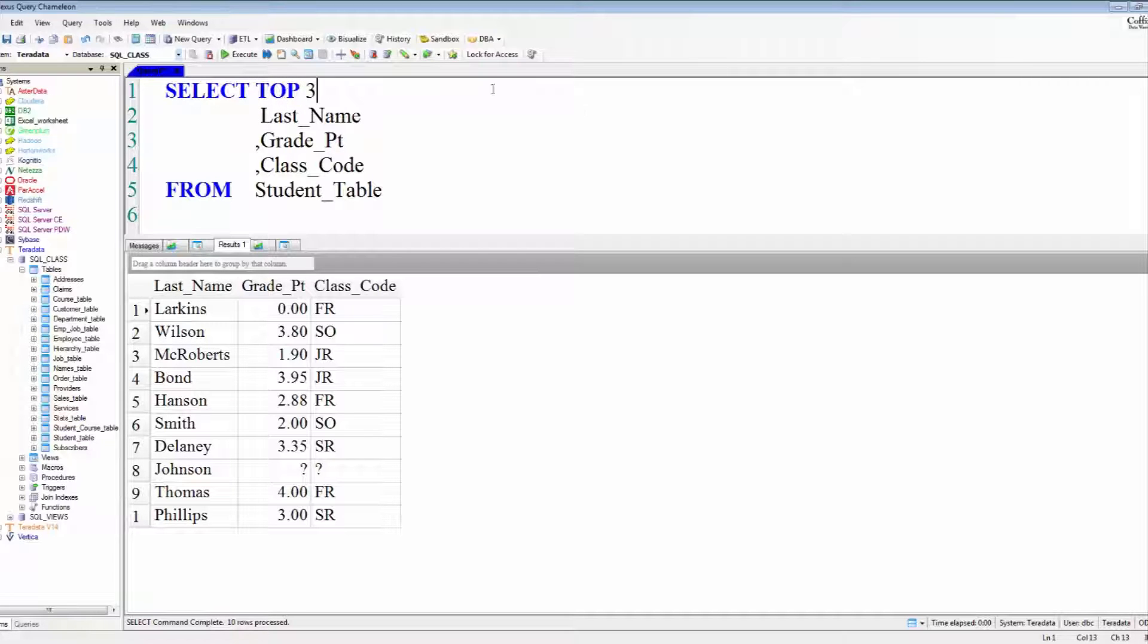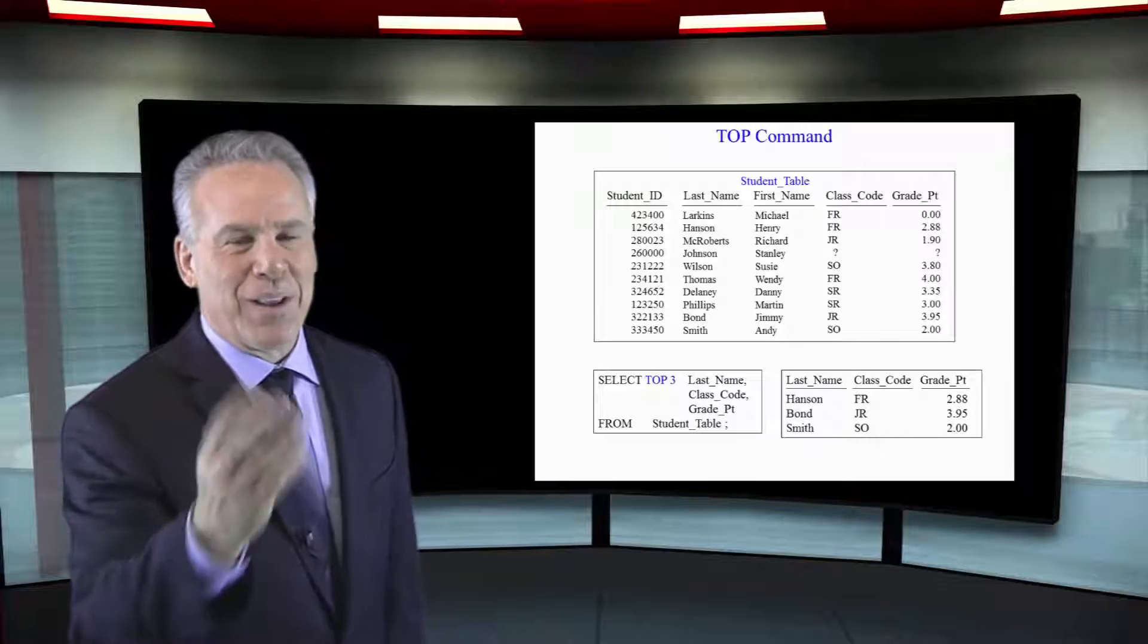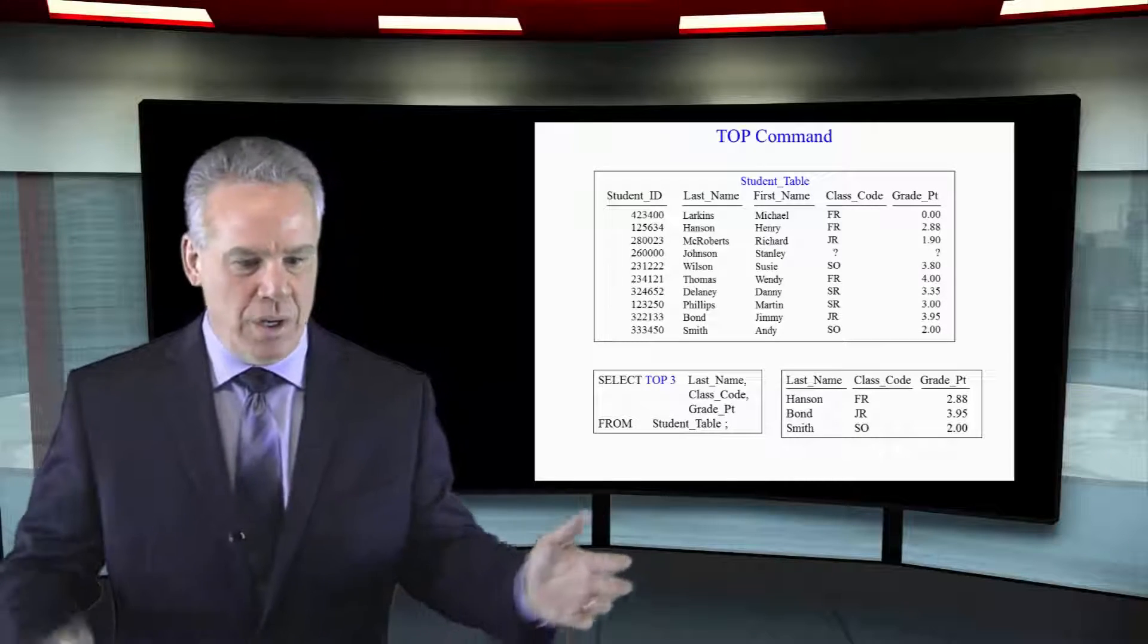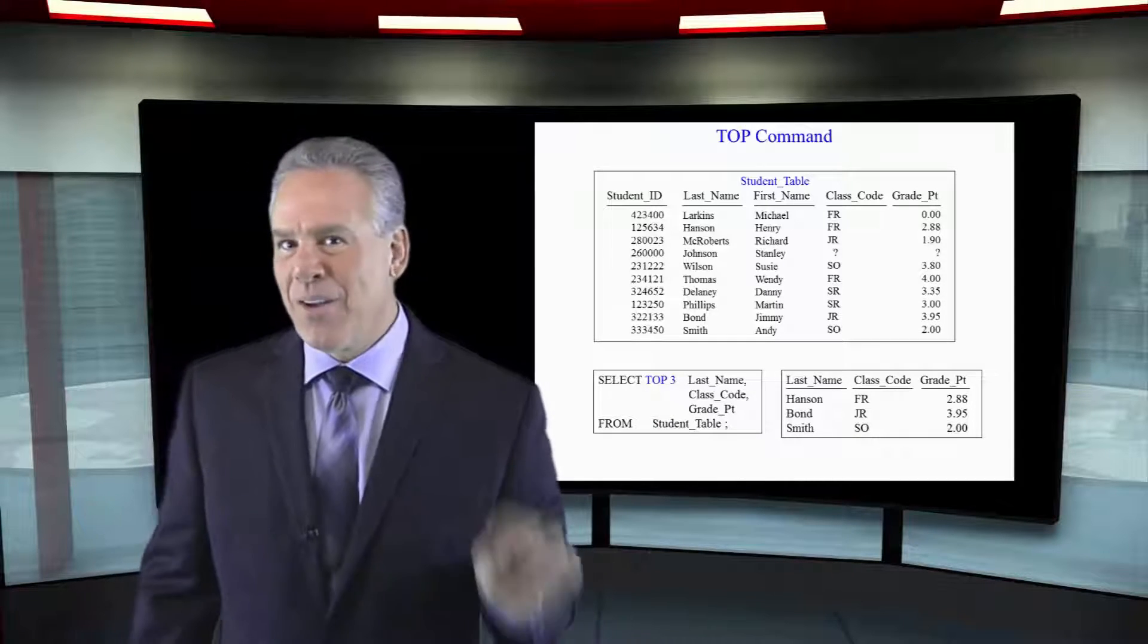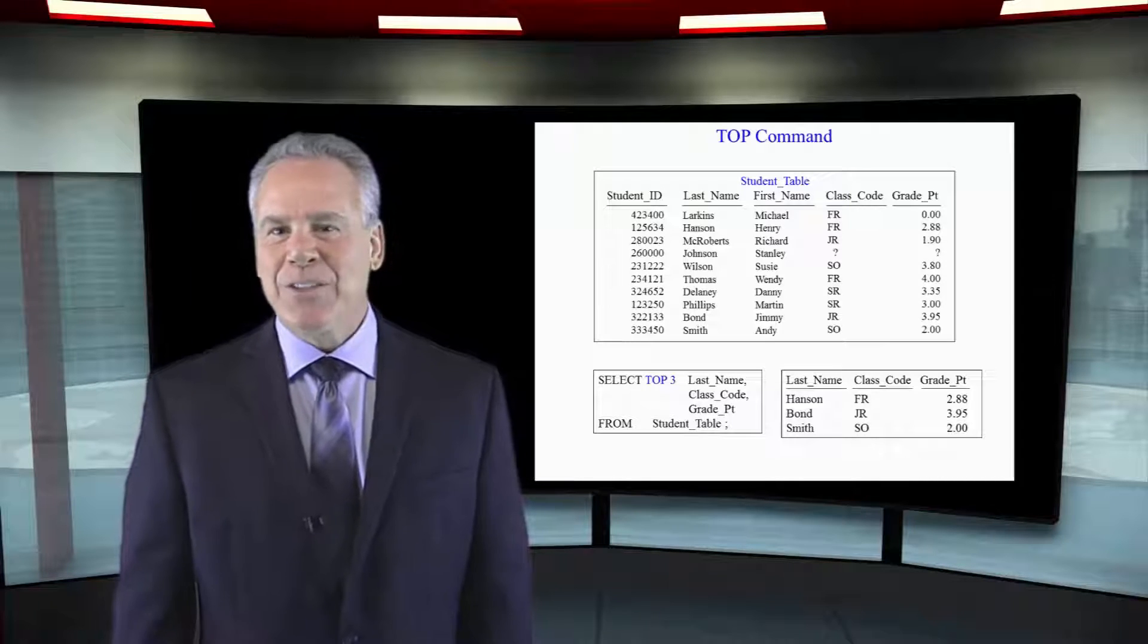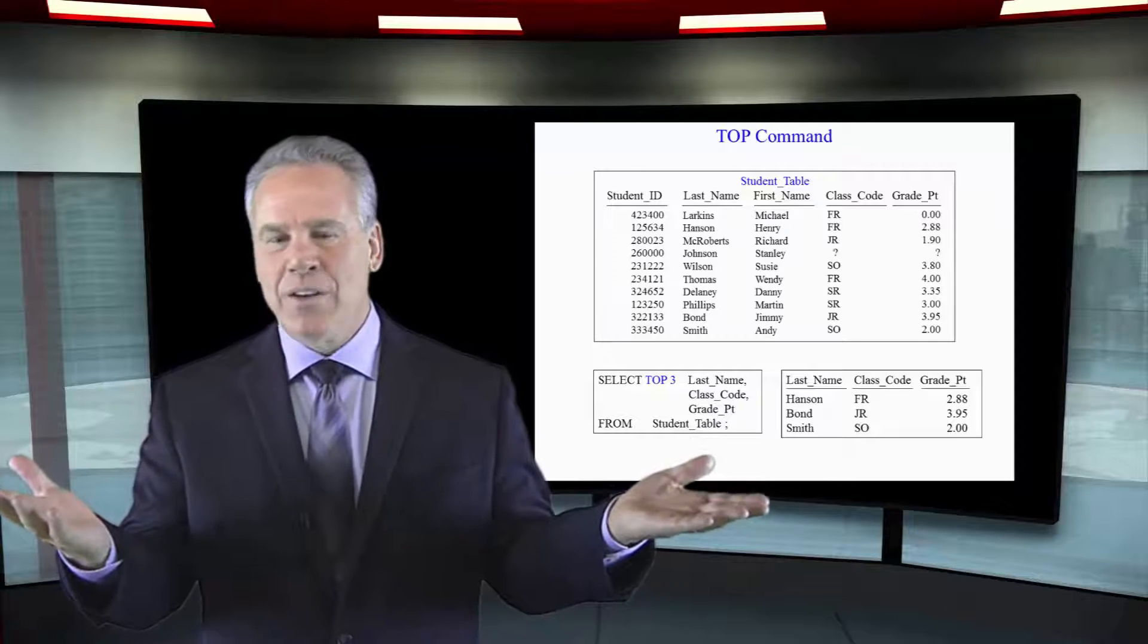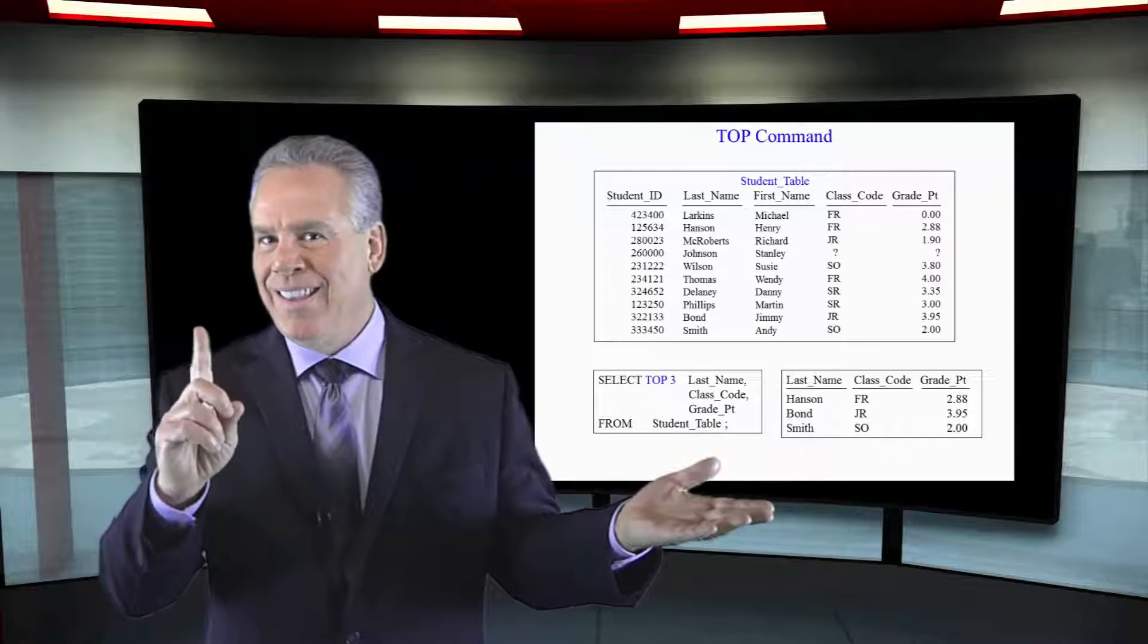Except just in front of the very first column or right after the select, probably a better way of saying that, you put, I want the top space three, and it goes, I'll give you three rows, and that's what the top command is going to do. It's going to say, I'll just give you a random three rows in this case.